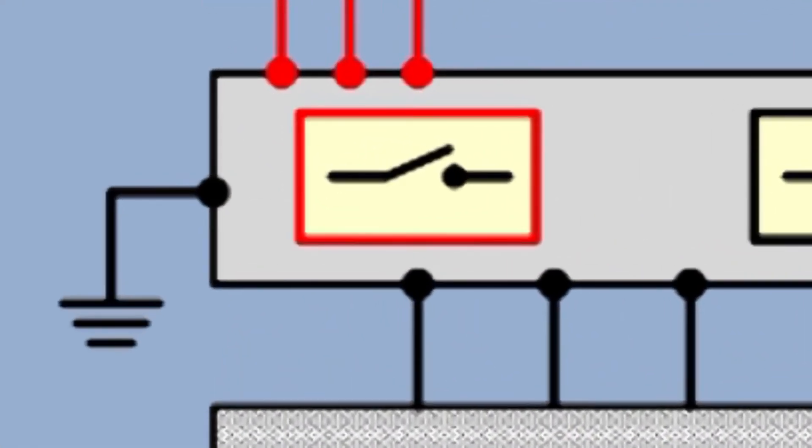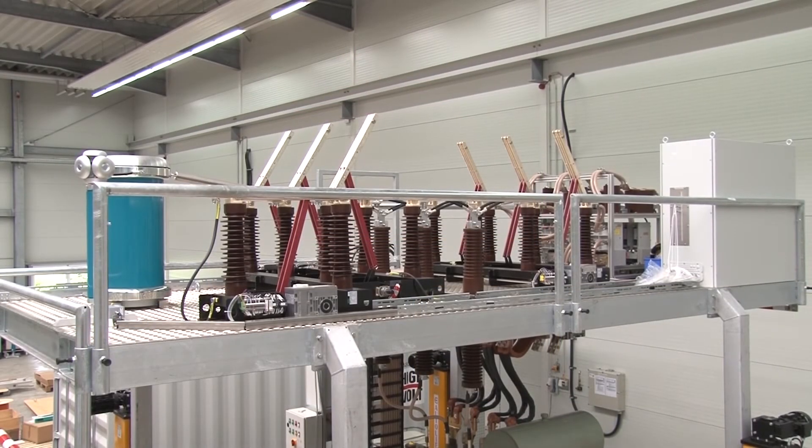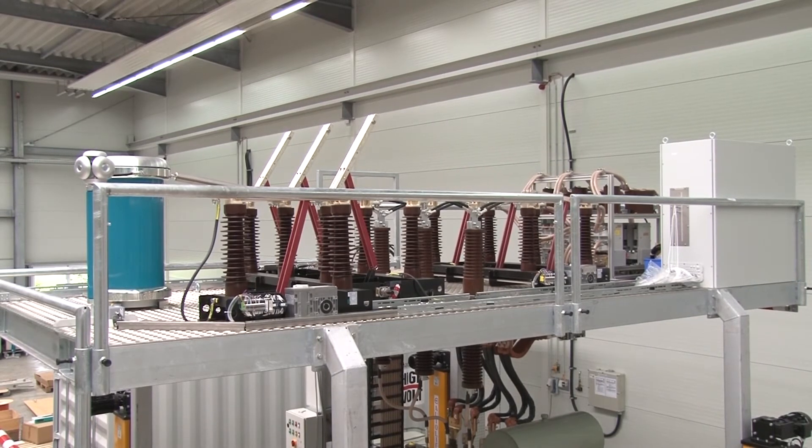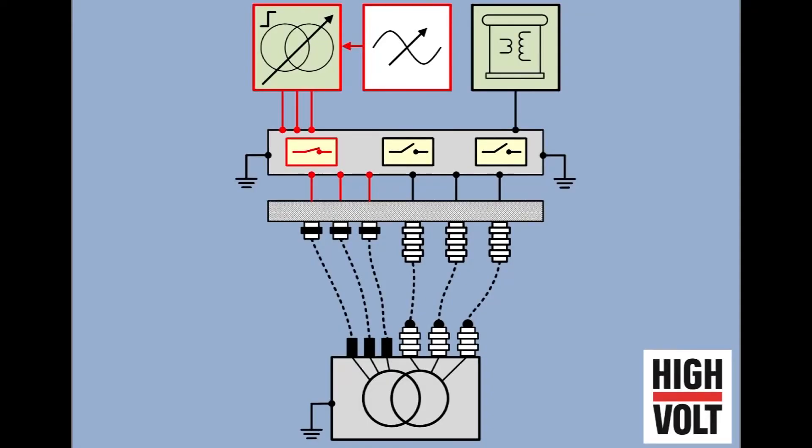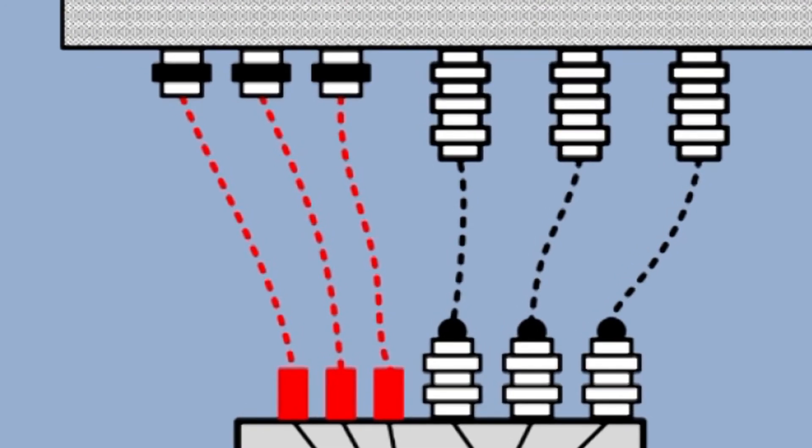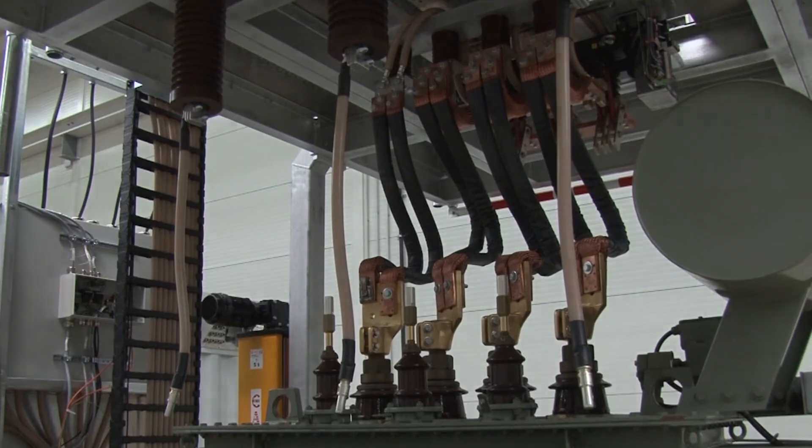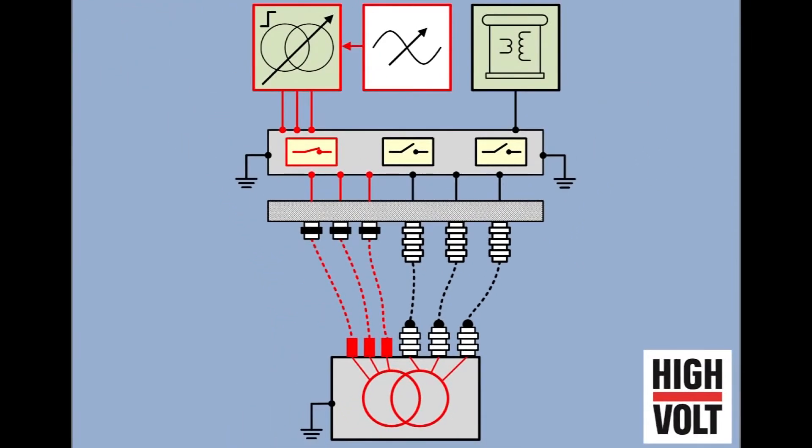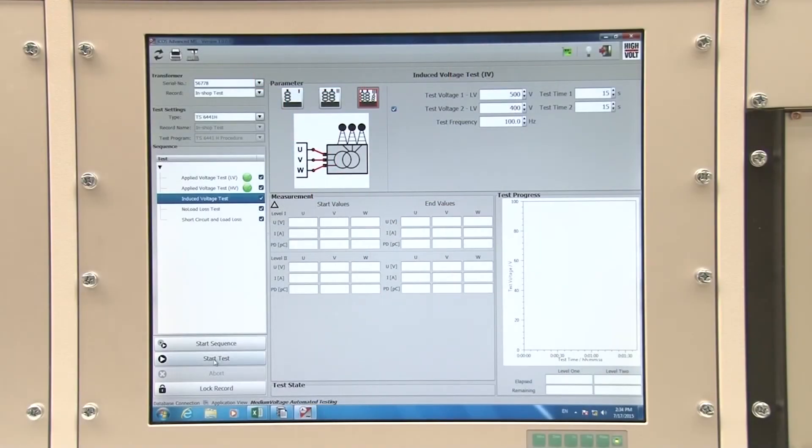There are further automatically controlled disconnectors to provide a safe connection with the low voltage side of the test object. The test voltage on the high voltage side is generated according to the ratio of the transformer under test. The pre-selected test sequence runs fully automatically.